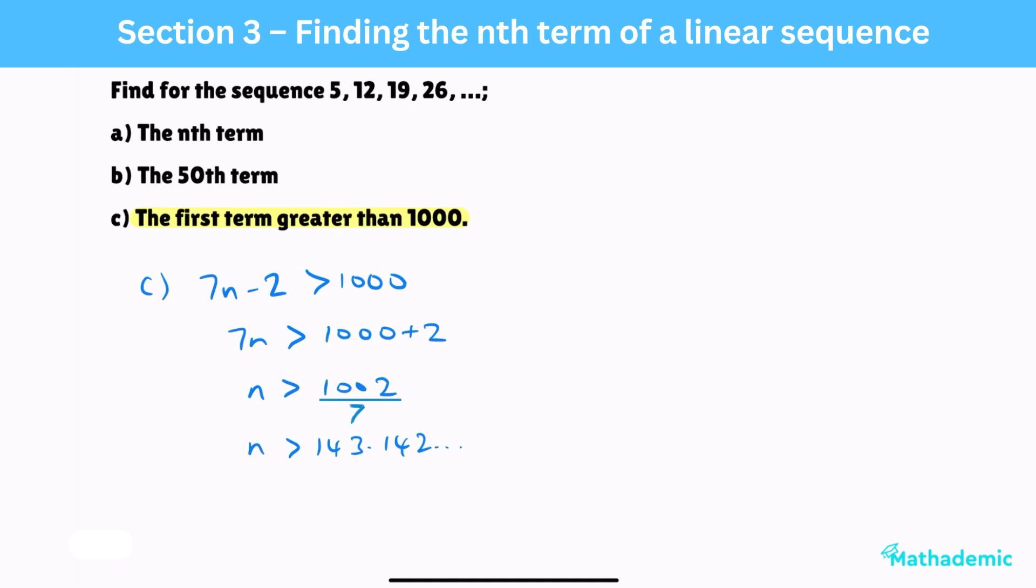Since n is a term in the sequence, it must be a whole number. For example, n can be 1 or 5 or 20, since we can have a 1st or 5th or 20th term, but we couldn't have a 1.5th term, it has to be a whole number. So, n is greater than 143.142, and is a whole number. The first possible answer will be the number 144. So, the first term that is over 1000 is the 144th term, and if we substitute this value into our nth term formula, we get 1006, indeed over 1000.